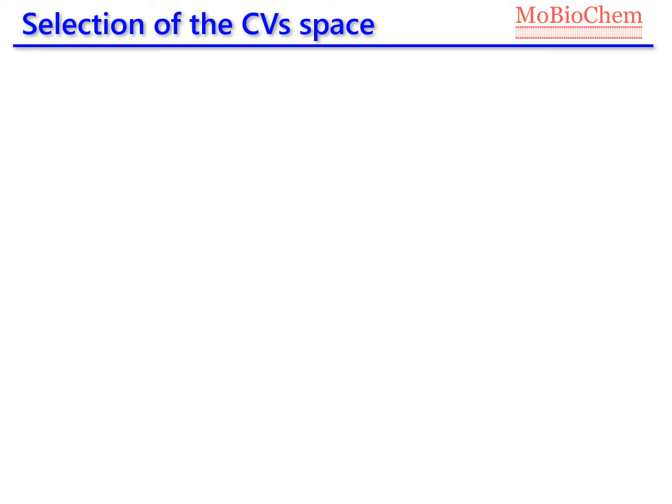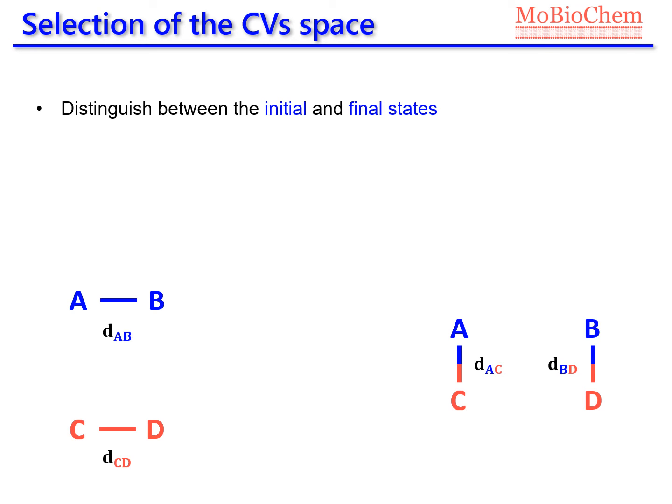Before finishing, I would like to do some remarks on the selection of the collective variable space. First of all, it's very important that they are able to distinguish not only between the initial and final states, but also between the relevant intermediates.